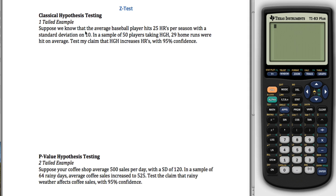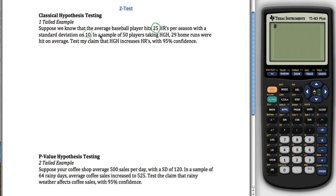In this case, suppose we know that the average baseball player hits 25 home runs with a standard deviation of 10. We're talking about all baseball players — population values — where the population average is 25 and the population standard deviation is 10. For population standard deviation, we've been using the symbol sigma, and we will continue to do so.